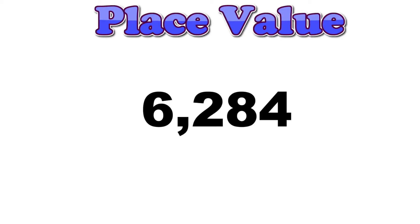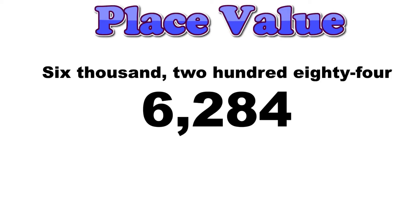Each digit in a number has a value. By noticing a digit's place in a number, you can determine how much it's worth. This number is pronounced 6,284. It has four digits. Let's begin by looking at the four.